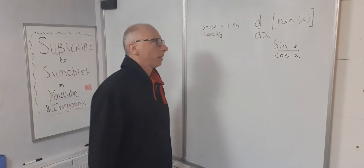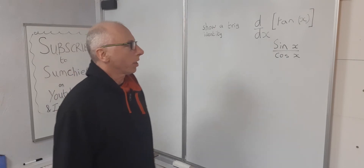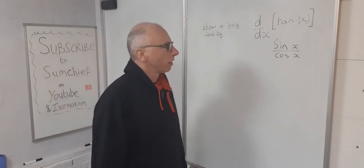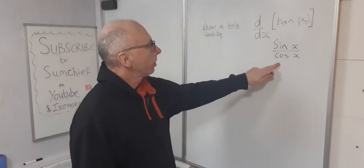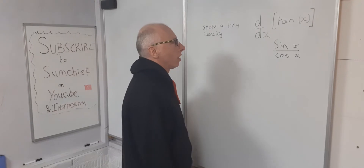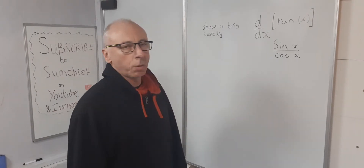In terms of sine and cosine we've got sine of x over cosine of x. So to take the derivative of this we will do the quotient rule.